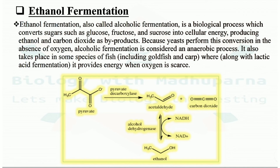Ethanol fermentation, also called alcohol fermentation, is a biological process that converts sugars such as glucose, fructose, and sucrose into cellular energy, producing ethanol and carbon dioxide as byproducts. Because yeast performs this conversion in the absence of oxygen, alcoholic fermentation is an anaerobic process. It also occurs in some fish species like goldfish and carp. In the reaction, pyruvate is converted to acetaldehyde plus CO2, and then acetaldehyde is converted to ethanol by alcohol dehydrogenase, where NADH is converted to NAD+.